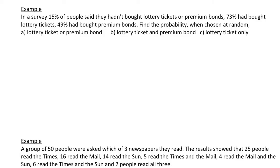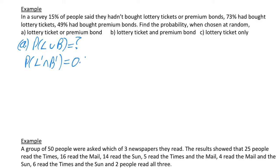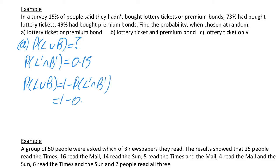We've an example to do here. In a survey, 15% of people said they hadn't bought lottery tickets or premium bonds, 73% had bought lottery tickets, and 49% had bought premium bonds. Find the probability that someone has bought a lottery ticket or a premium bond. For part A, we want the probability of L union B. The question tells us 15% had not bought any lottery tickets or premium bonds, so the probability of L union B equals 1 minus the probability of not L and not B, which is 1 minus 0.15, which equals 0.85.